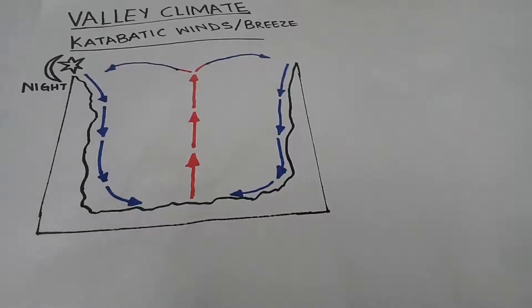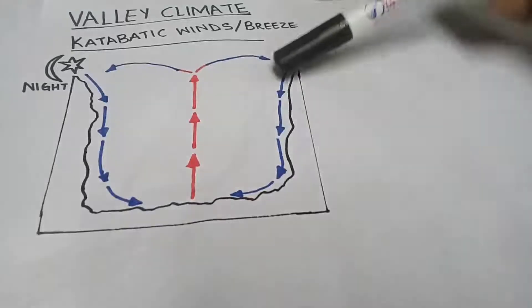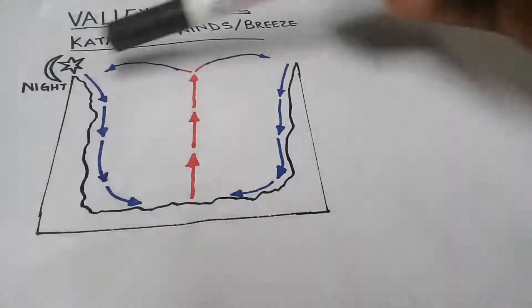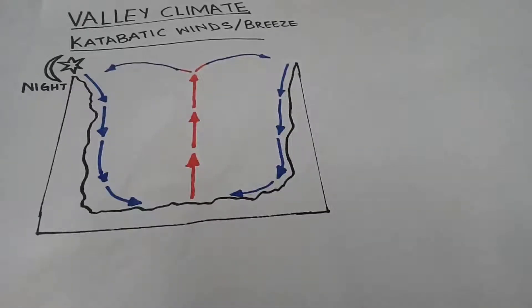Today we're going to be discussing a lesson topic under climate and weather, which is katabatic breeze. Katabatic breeze — these are night winds that go down the slope during the night. As you can see, these are katabatic breeze, or you can say katabatic winds — going down the slope to the valley floor.